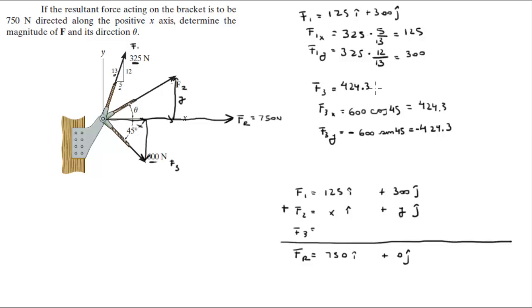So now the problem becomes very easy. You know that 125 plus x plus 424.3 is supposed to be 750, and 300 plus y minus 424.3 is supposed to be 0.